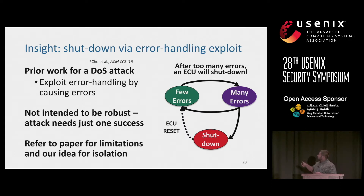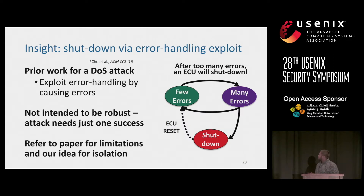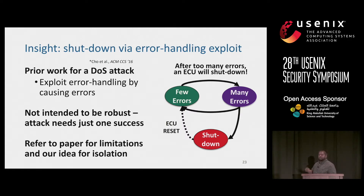We borrow another insight from prior work that used an error handling exploit to perform a denial-of-service attack. They found that in the CAN error handling, if you could cause a certain number of errors, an ECU will voluntarily shut itself off to prevent further harm to the network. Their method was not robust — it was designed as an attack and only needed one success. Because we perform this multiple times, we had to come up with a different approach. We discuss this in the paper, including ECUs that auto-recover and other limitations.